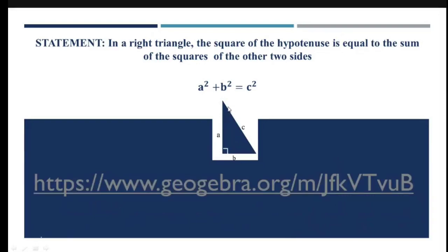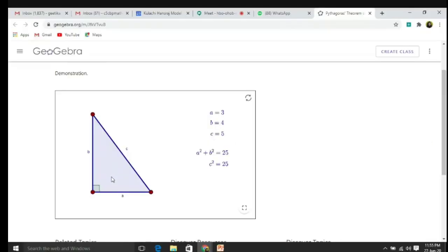Let us demonstrate this theorem through the GeoGebra applet. Here we have a right angle triangle and we know that one of the Pythagorean triplets is 3, 4 and 5.